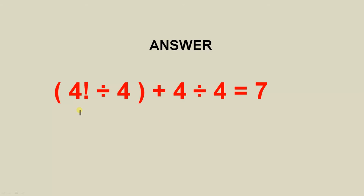And the answer? 4 factorial divided by 4 plus 4 divided by 4. And that gives you 7.